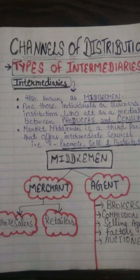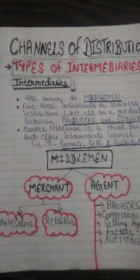Good morning everyone. Yesterday we started the chapter on Channels of Distribution in Marketing Management, where we covered meaning and types. Now we move on to the topic of types of intermediaries. Intermediaries — what are they? Many producers do not sell their products and services directly to consumers; instead they use market middlemen to execute this function, and those market middlemen are known as intermediaries.